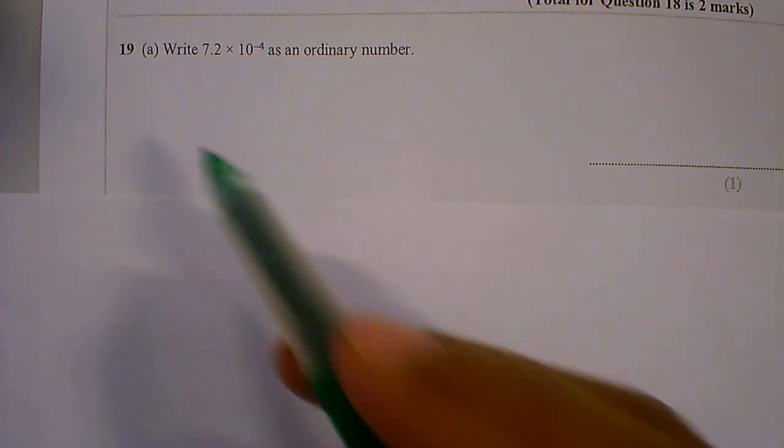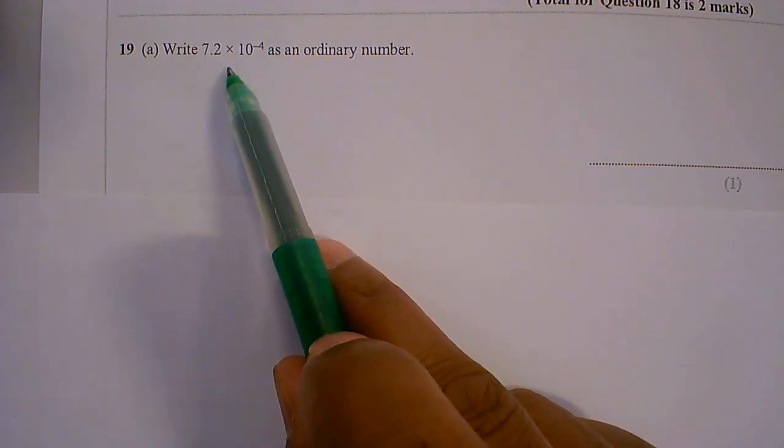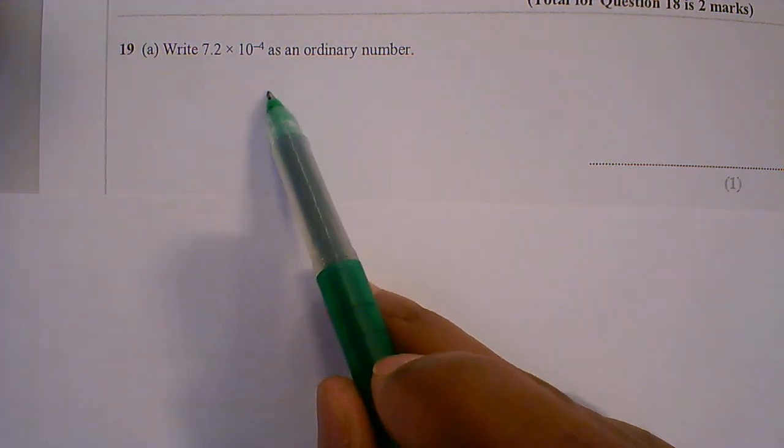Question 19a, write 7.2 times 10 to the power minus 4 as an ordinary number.